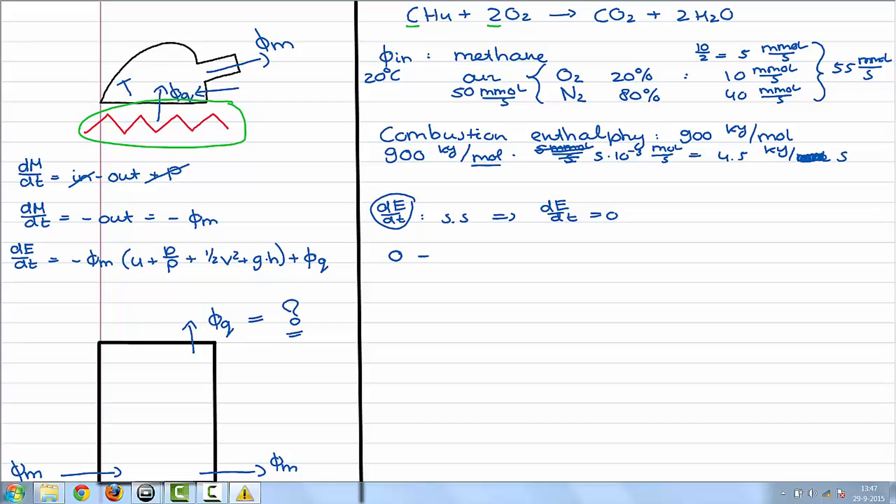If we now look for the energy balance equation for our black box, we have zero is in minus out plus production. The inflow is Vm, the outflow is the other Vm, and also VQ is going out. And for production we say this is the combustion enthalpy. So now inflow is internal energy inflow minus internal energy outflow minus the energy escaping to the teapot plus the combustion energy.